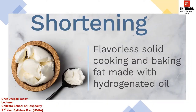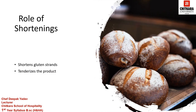Shortening: any fat acts as a shortening in baking because it shortens gluten strength and tenderizes the product. However, we generally use the word shortening to mean any of a group of solid fats, usually white and tasteless, that are specifically formulated for baking. Shortening generally consists of nearly 100% fat. The main objective of using shortening in bakery is to shorten gluten strength and tenderize the product.